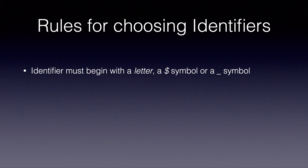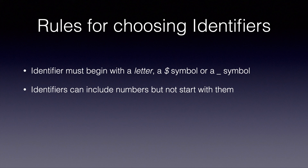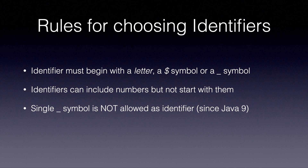The very first rule is that an identifier must begin with a letter, a dollar symbol, or an underscore. The second rule is identifiers can include numbers, but cannot start with a number. The third rule is the underscore symbol alone is not allowed as an identifier since Java 9. It can start with an underscore followed by other valid characters, but cannot be just an underscore by itself.